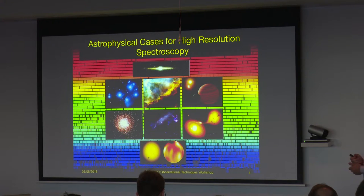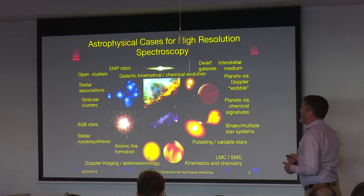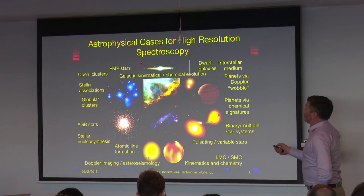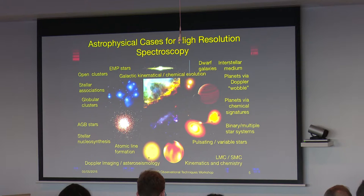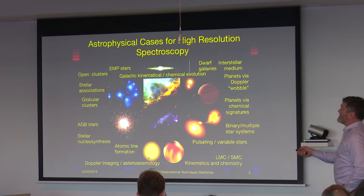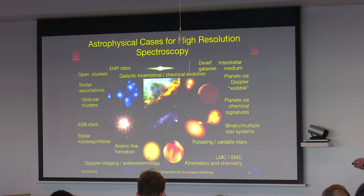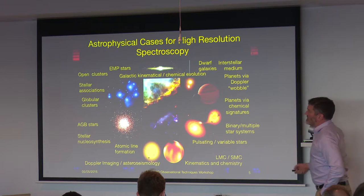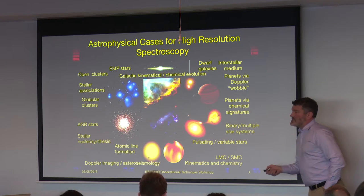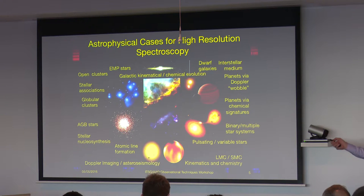So what do you want to use that for? You've got extremely metal-poor stars - some of the most metal-poor stars in the galaxy - you can find that out with high resolution spectroscopy. Studying open clusters, stellar associations, globular clusters - this is studying stars to find out their detailed abundances. Tracing the kinematic and chemical evolution of the galaxy, and potentially with 4MOST, even other nearby galaxies. So, getting very precise radial velocities and very precise elemental abundances. Same thing with dwarf galaxies.